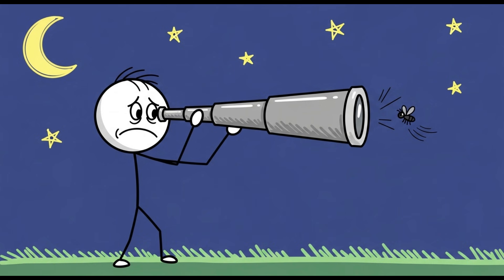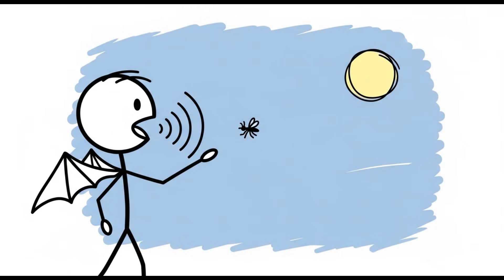They use their eyes for navigating long distances and seeing larger objects, but when they're hunting tiny, fast-moving insects in total darkness, eyesight is like trying to catch a fly with a telescope. Echolocation gives them a ridiculously detailed 3D acoustic map of their surroundings.